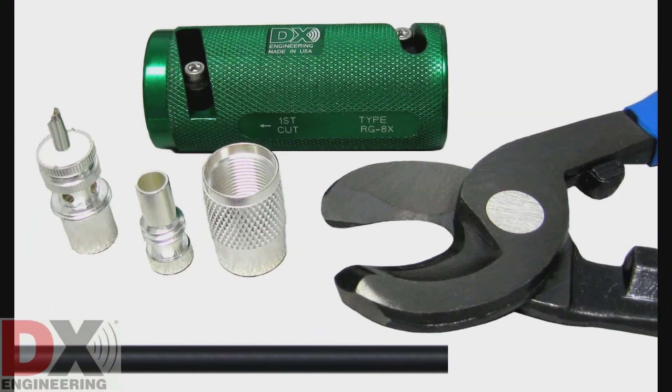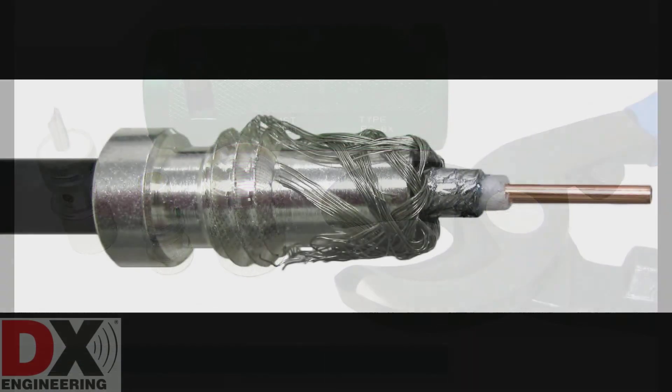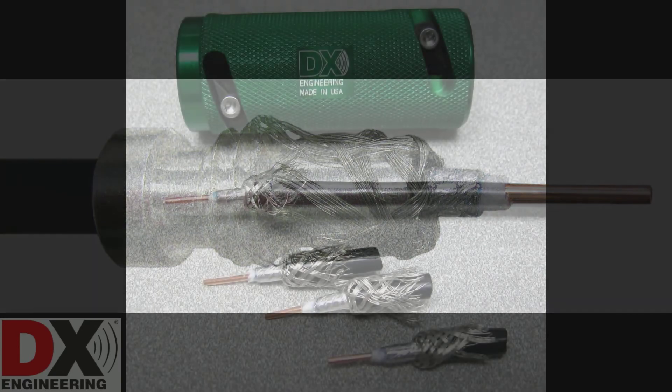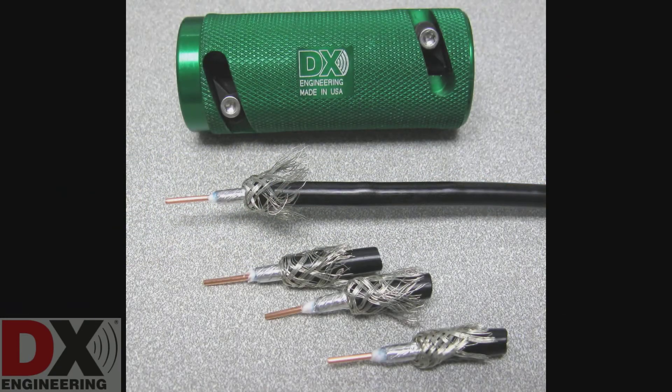Practice makes perfect. When you first start using the tool, you may not get good results. The key is gentle pressure while feeding the rounded coaxial cable into the tool and keeping it straight, not bent.